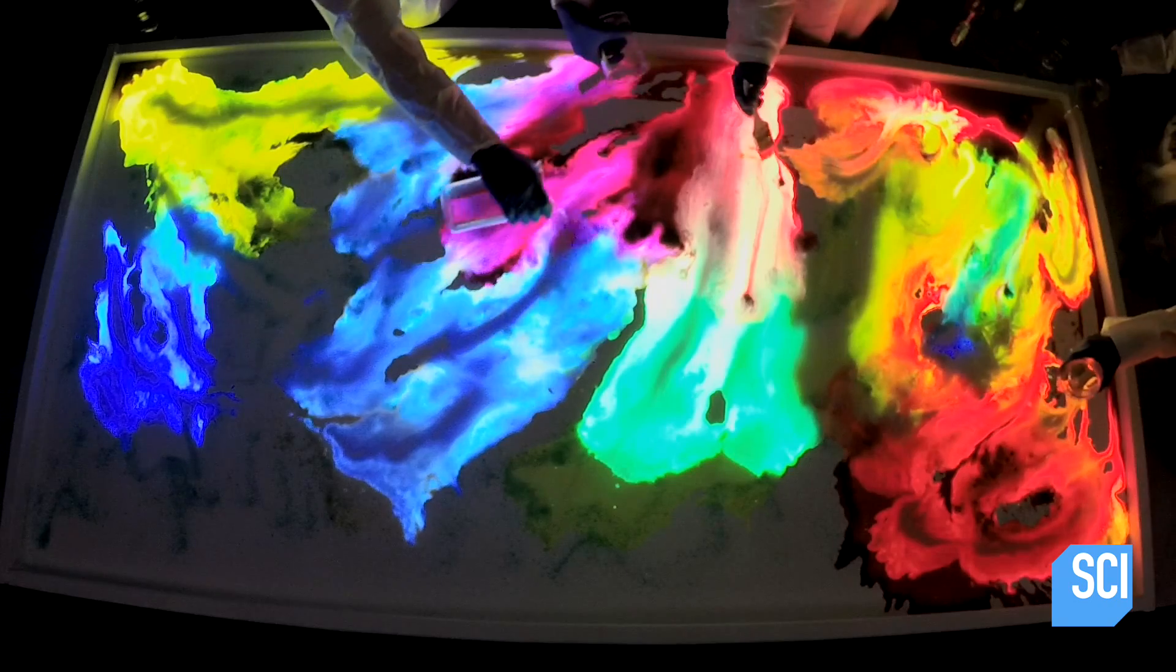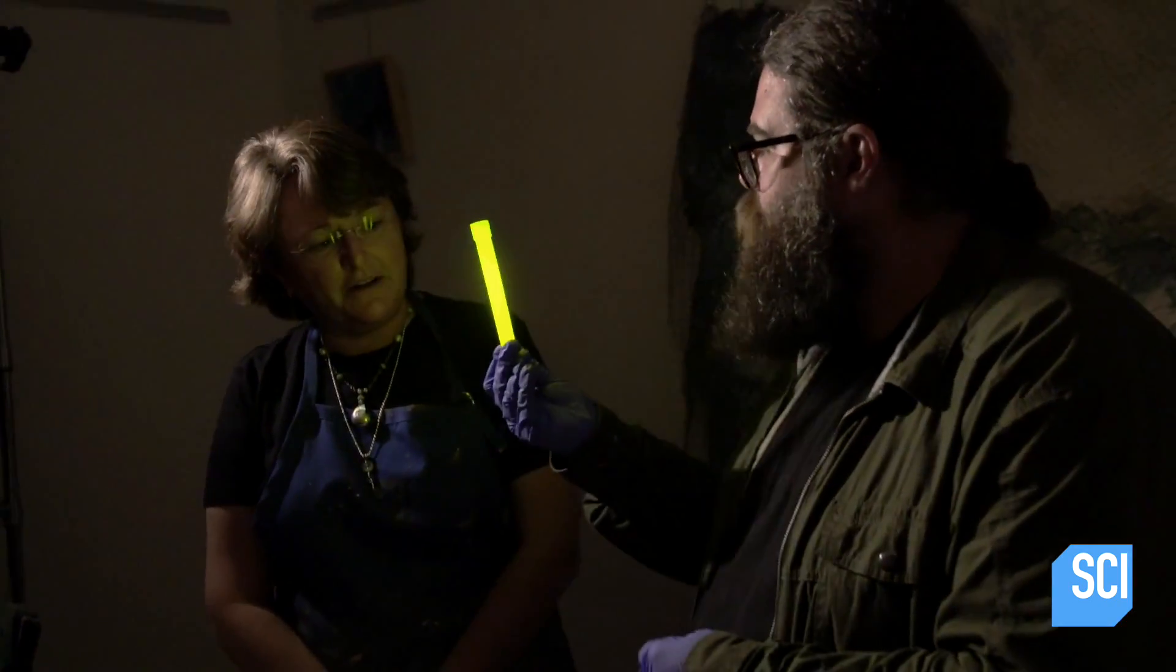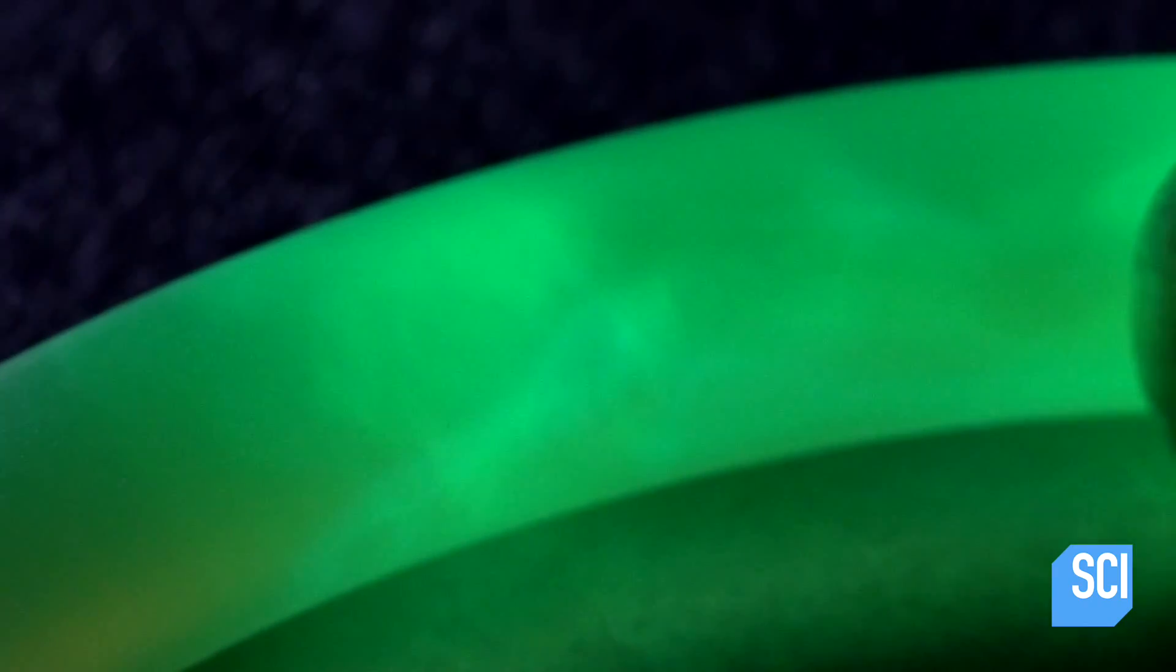So why does this reaction look so bright? Glow sticks make light through a process called chemiluminescence. Basically, you kick off a chemical reaction when you bend the glow stick.